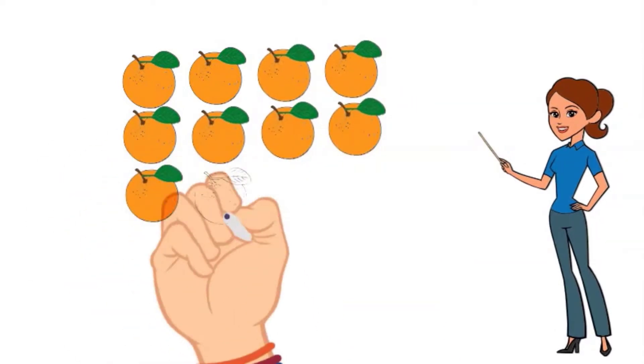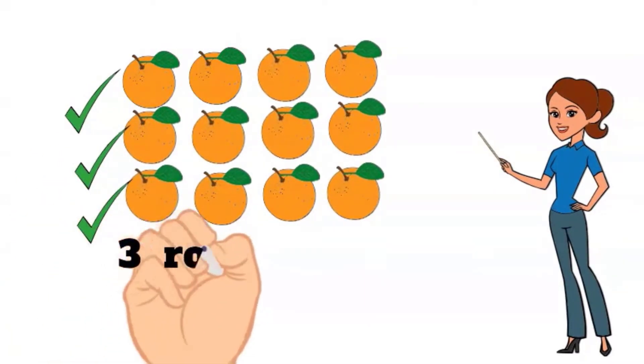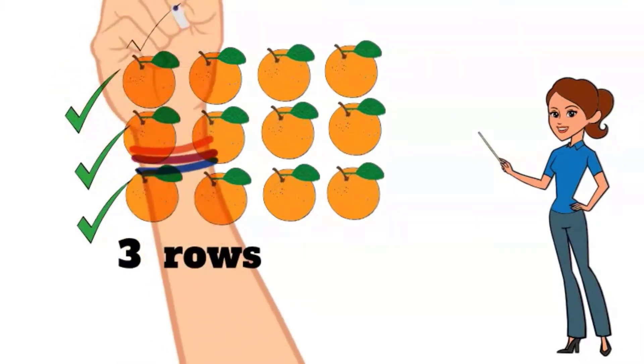How many rows of oranges do you see? One, two, three rows of oranges. Three rows of oranges.